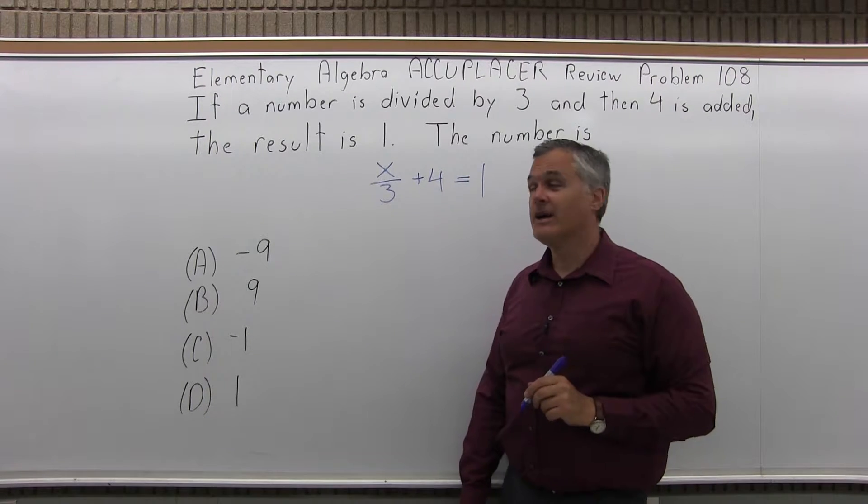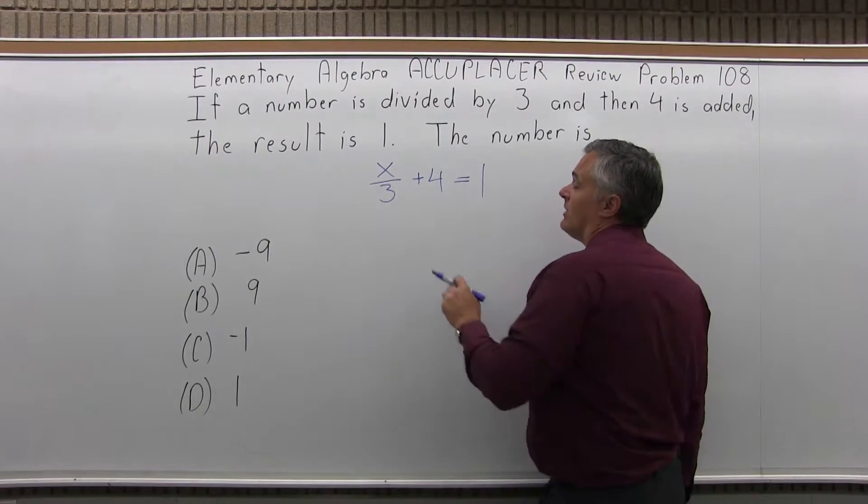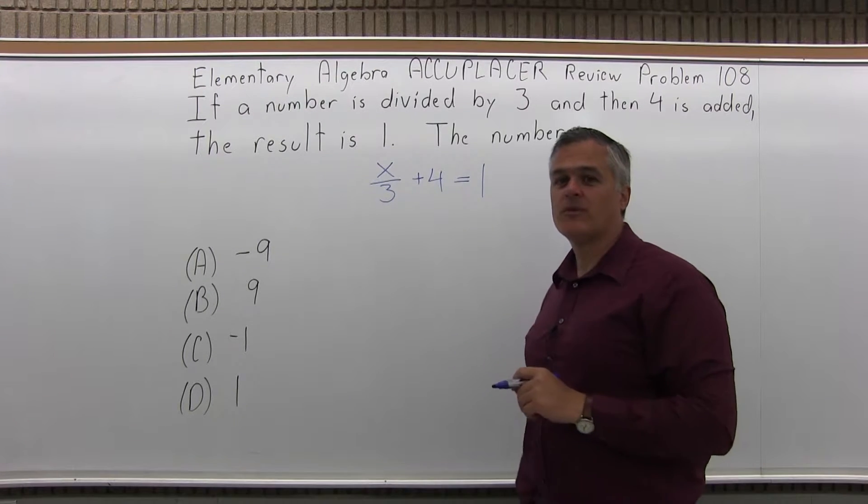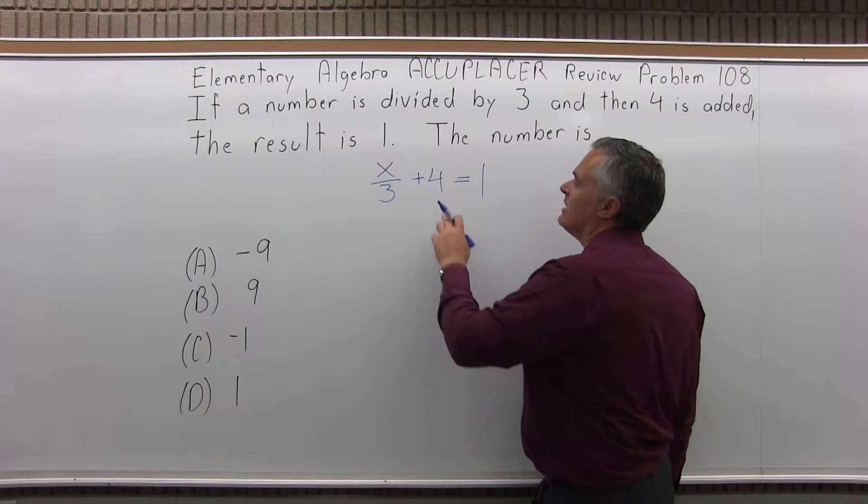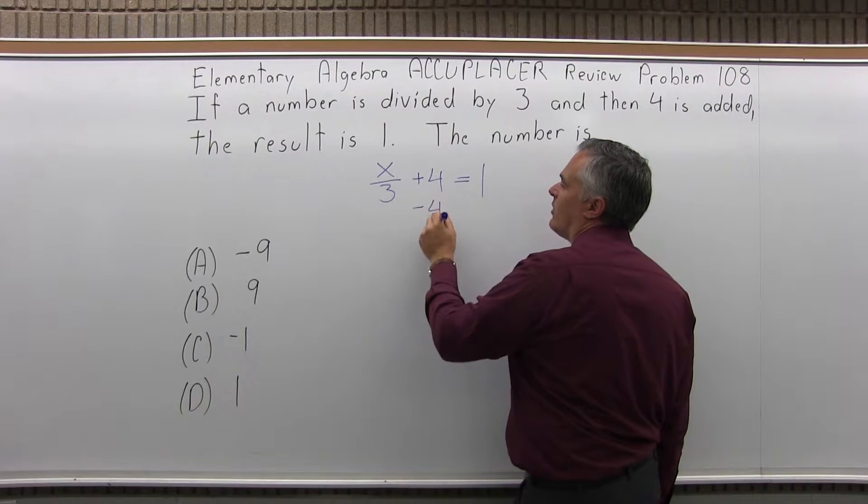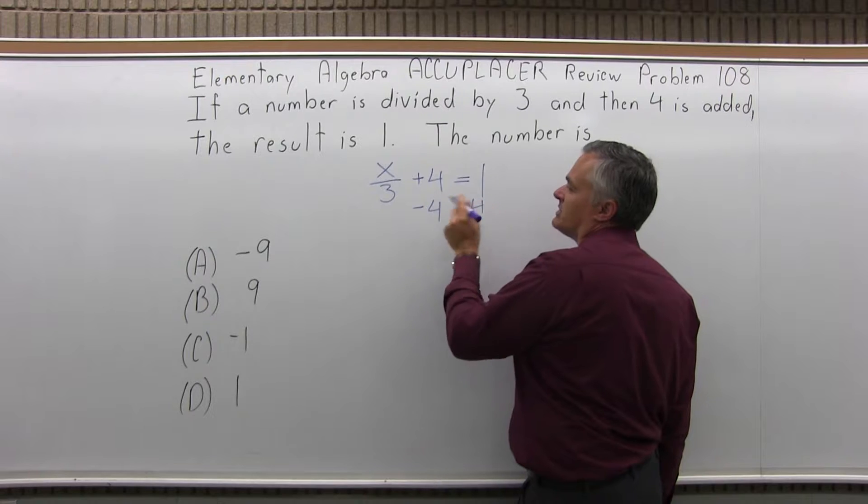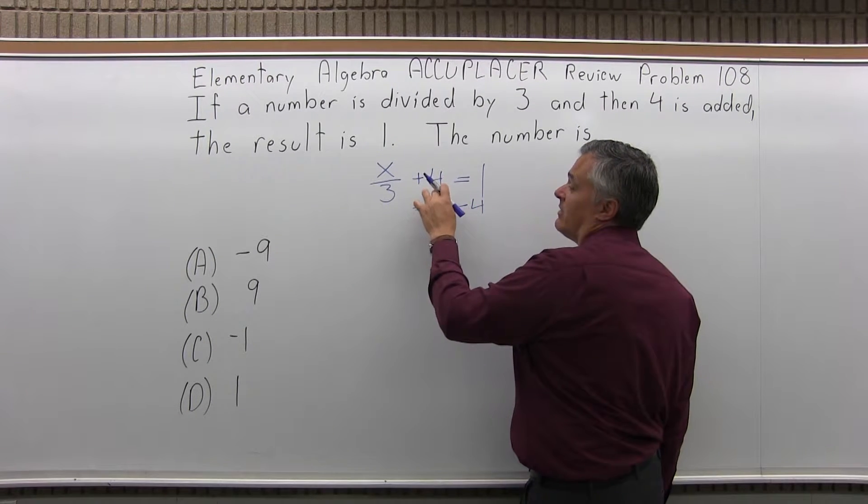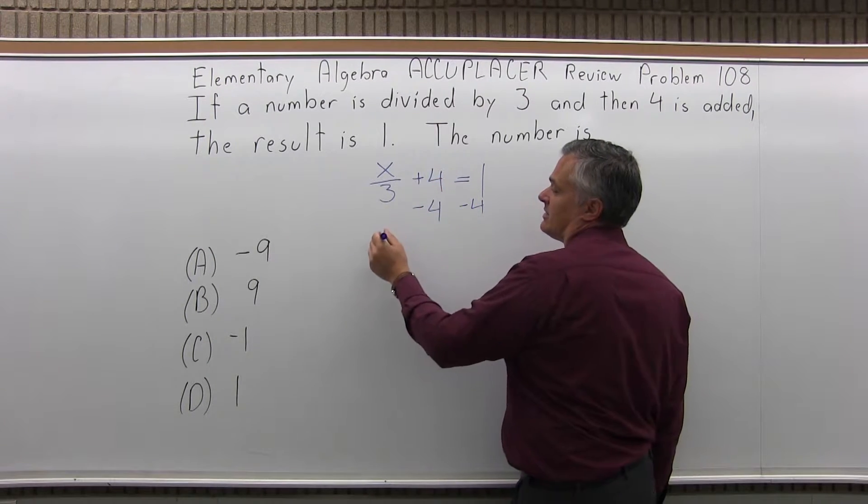So now we can find x. The divided by 3 does make it a little bit tougher, but that's not that bad. Because I have an equation, I can do anything I want as long as I do the same thing to both sides. So on both sides, I'm going to subtract 4 to cancel it on the left.